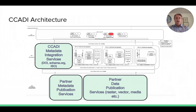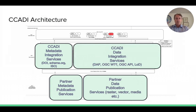In the middle tier, we are working to bring it all together through integration. One of the value propositions our partners have indicated is to bring together these different datasets as integrated products. That includes integrating metadata using different standards including DOI, Schema.org, and ISO standards, as well as bringing together data using a number of different standards and technologies including DAP, various OGC tools, and linked open data.